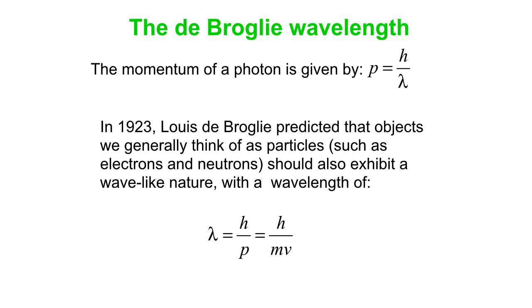And now, because these are things with mass that we're talking about, we can write the momentum as mv. So you can write this de Broglie wavelength for things we typically think of as particles as h over mv.